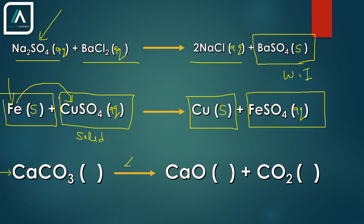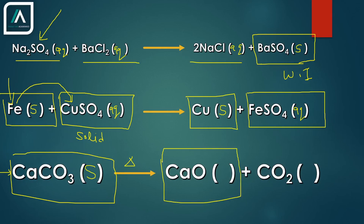Next: calcium carbonate is decomposed with heat into calcium oxide and carbon dioxide. Calcium carbonate is a solid. Calcium oxide is a metal oxide, so it is going to be solid — this is lime. Carbon dioxide is going to be gaseous.